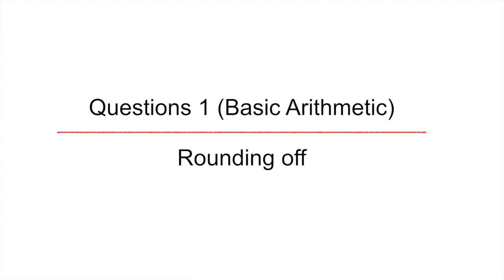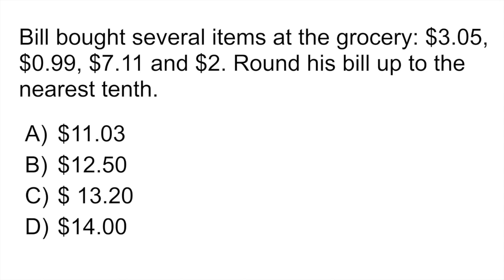In our first question, it's a basic arithmetic question involving rounding numbers. It says Bill bought several items at the grocery. One of them was valued at $3.05, $0.99, $7.11, and $2.00. And the question says, round his bill up to the nearest tenth.